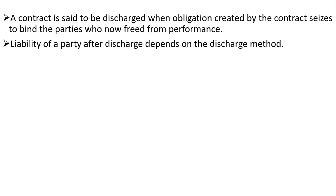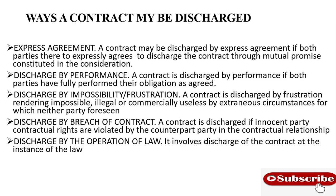Welcome to a lesson by the name discharge of a contract. A contract is said to be discharged when the obligation created by the contract ceases to bind the parties, who are then freed from performance. Liability of a party after discharge depends on the method of discharge. There are various ways a contract may be discharged.